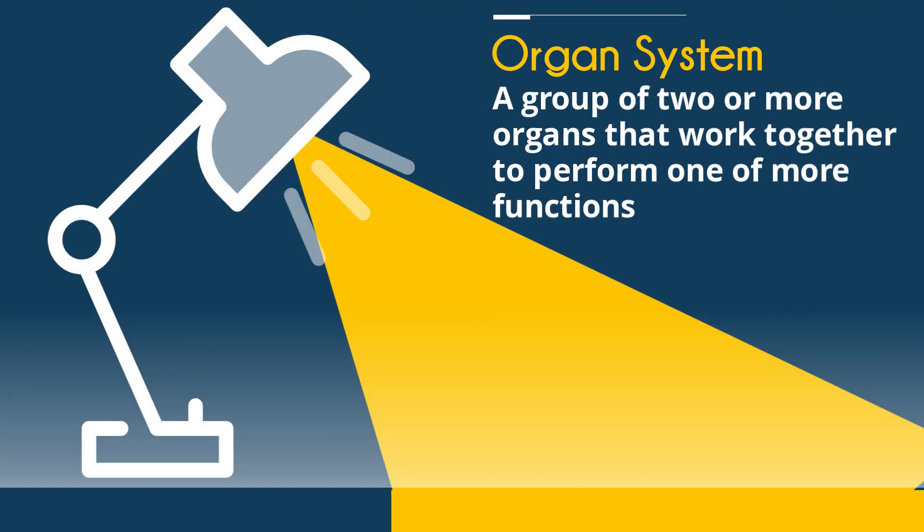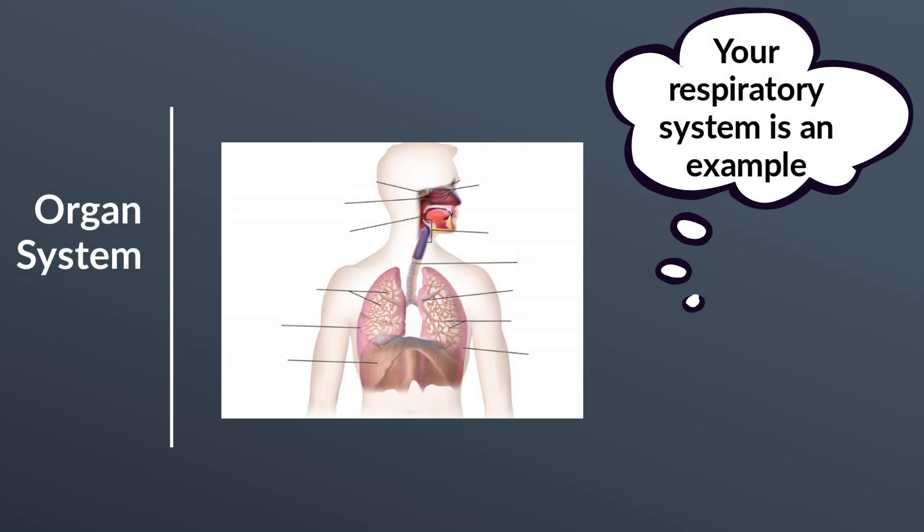And finally, an organ system is a group of two or more organs that work together to perform one or more functions. This respiratory system is a group of organs that work together to help you convert oxygen to energy.